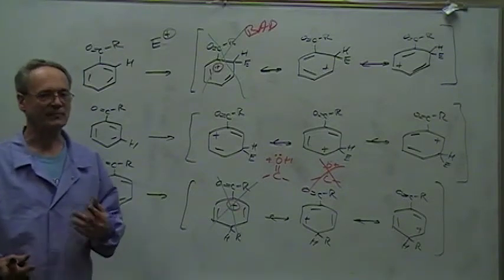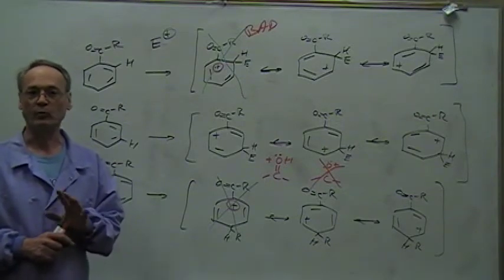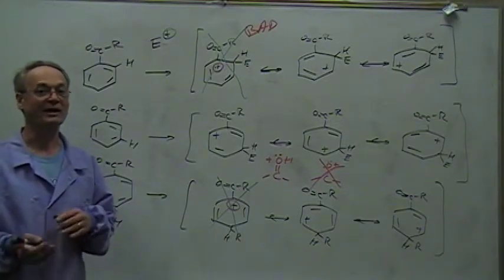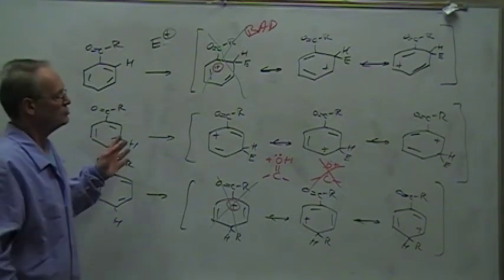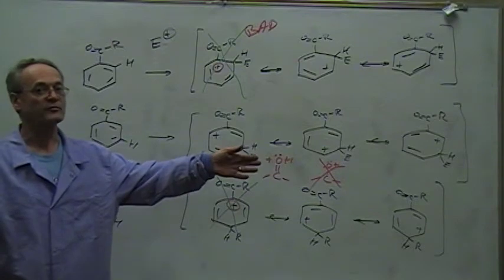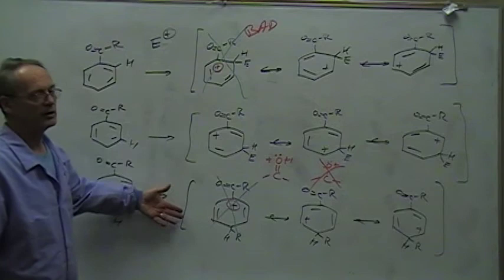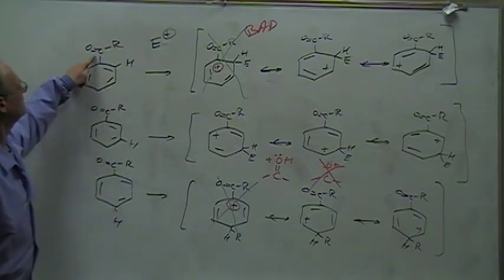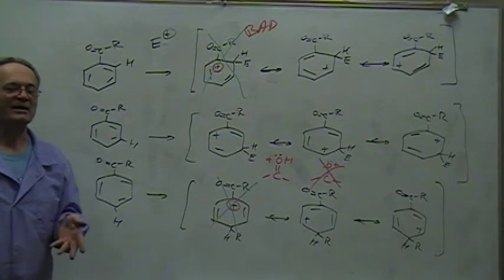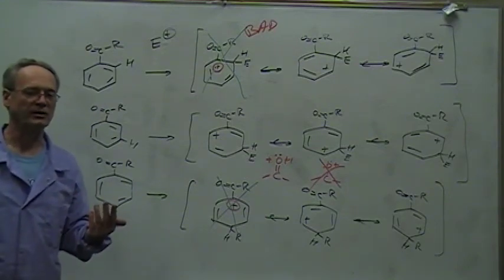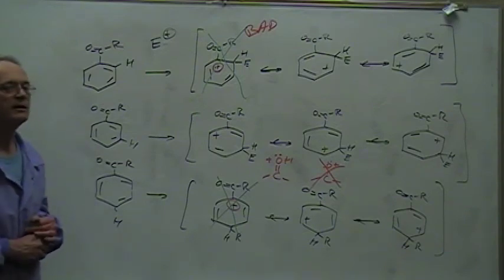That ends the presentation except for one more thing: what happens with halogens? I'll let you work out for yourself why halogens are deactivating but ortho-para directing. Draw the three or perhaps four resonance structures for ortho, meta, and para attack on chlorobenzene, remembering that there are lone pairs on the chlorine, and ask yourself why it's deactivating but ortho-para directing. We'll talk about that in class because it requires a little bit of extra discussion. Thank you for your attention.